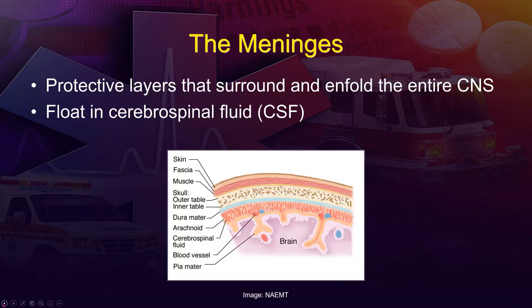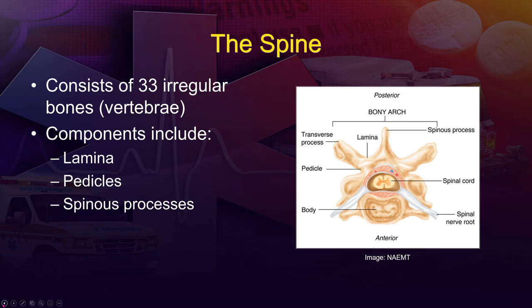The meninges continue down into the spinal column and have the same basic role as they do in the brain. There are potential spaces where fluid can accumulate and put pressure on the spinal cord in the closed space of the vertebral passageway. The spinal cord travels in the center of the vertebrae just behind the body. For topographic anatomy, when we palpate the back of a patient, we're feeling the spinous process of the bony arch.